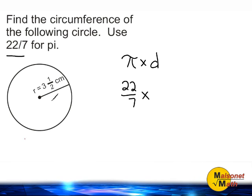But notice, the diameter is not given. Half of the diameter is given, which is the radius. If this is the radius right here, 3½, then the other side will also be a length of 3½.